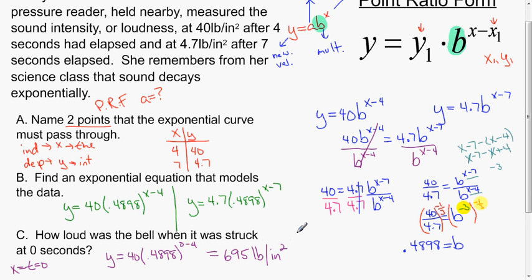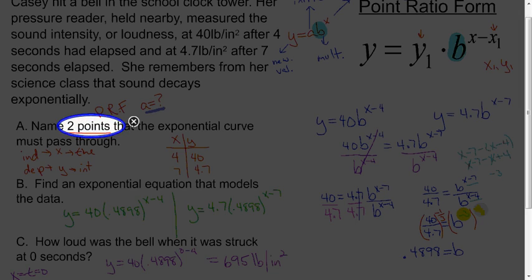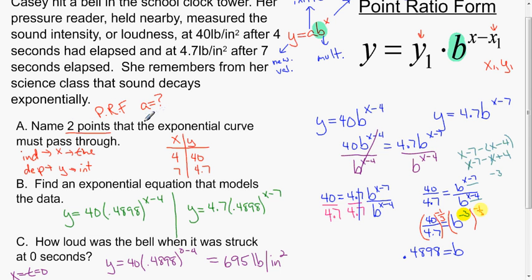This problem hinged on the fact of using point ratio form. The key clue for this was that you were not given an initial value but you were given two points on the curve. That little bit of a weird idea when you look at the form, it looks like you need one point on the curve, but having two scenarios of it allows you to write the exact same equation in two different looking ways but in fact are equal.